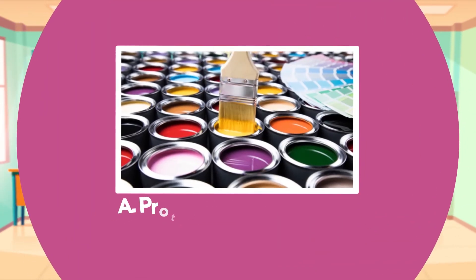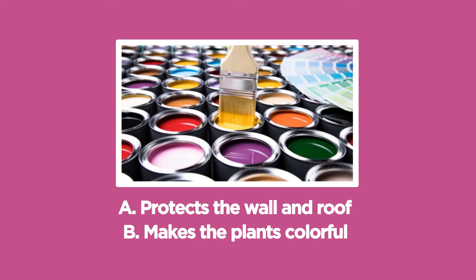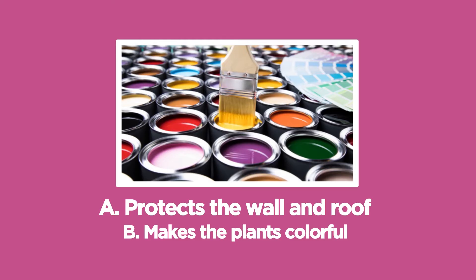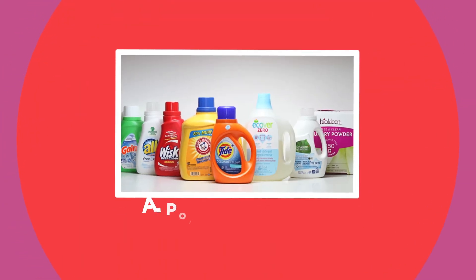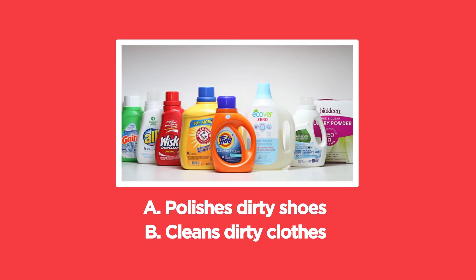Now we are ready for the next activity! This time, you will see pictures of materials you commonly see at home or in school. Let's check if you know its usefulness or harmfulness. Just choose the letter of your answer from the option that will be given. First picture is paint. A: Protects the wall and roof. B: Makes the plants colorful. What is your answer? You got it right! Letter A! Second picture is detergent. A: Polishes dirty shoes. B: Cleans dirty clothes. What is your answer? Correct! It's letter B!